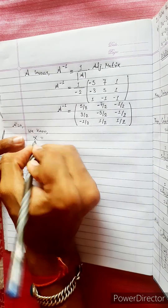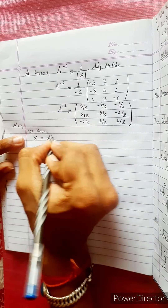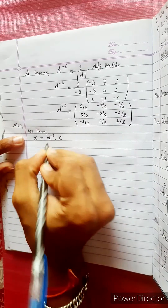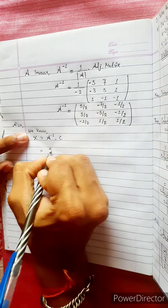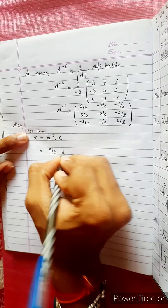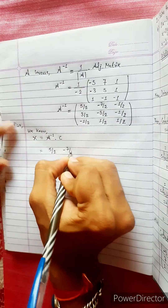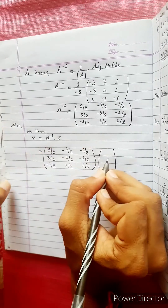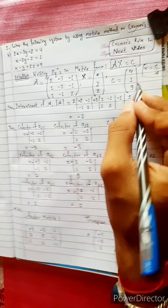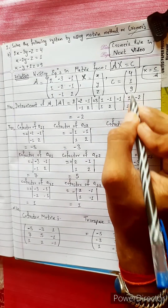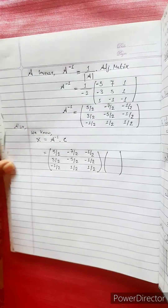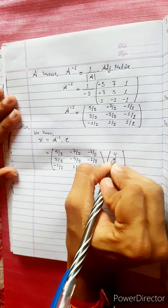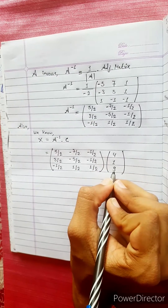x equals A inverse into C. A inverse is given. 5 divided by 2, minus 7 by 2. x equals A inverse into C. C is the same: 4, 1, 9.